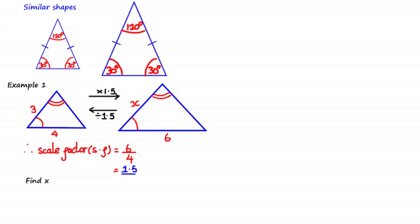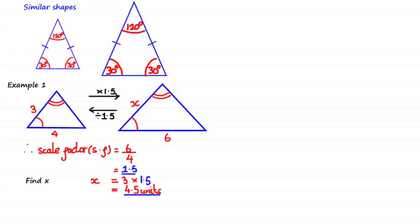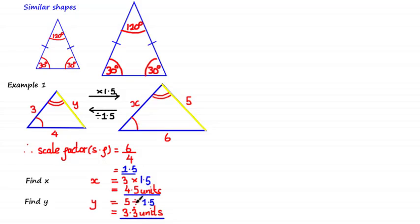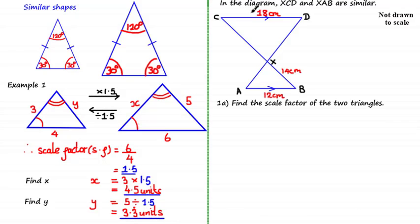To get from the smaller triangle to the larger triangle, multiply all lengths by 1.5. To get from the larger triangle to the smaller triangle, divide all lengths by 1.5. Given these two triangles, we might be asked to find the value of x. By noticing that the side we are looking for is similar to this side, we multiply 3 by the scale factor of 1.5 to get x equals 4.5 units. If the length of this side were 5 units and we were asked to find y, we divide 5 by 1.5 to get y equals 3.3 recurring units.